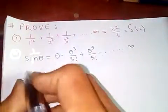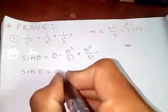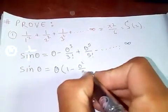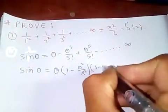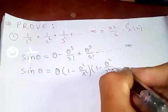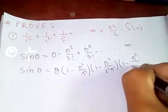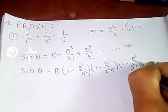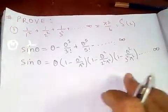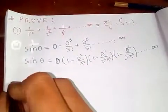We also know that sin θ in terms of its product formula equals θ times (1 - θ²/π²)(1 - θ²/2²π²)(1 - θ²/3²π²) and so on up to infinity.